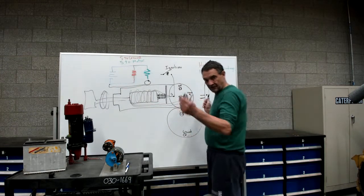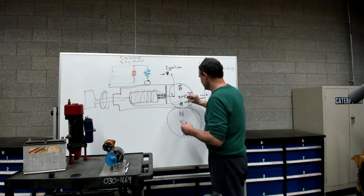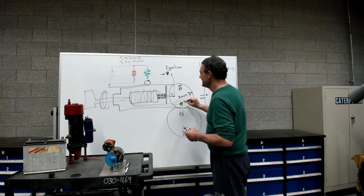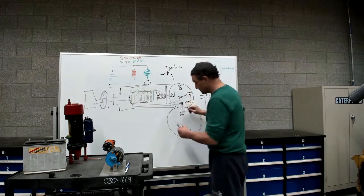Now we're going to check the pull-in windings. We're going to have power to the S terminal once again and to the motor terminal, which is disconnected from the starter right now.